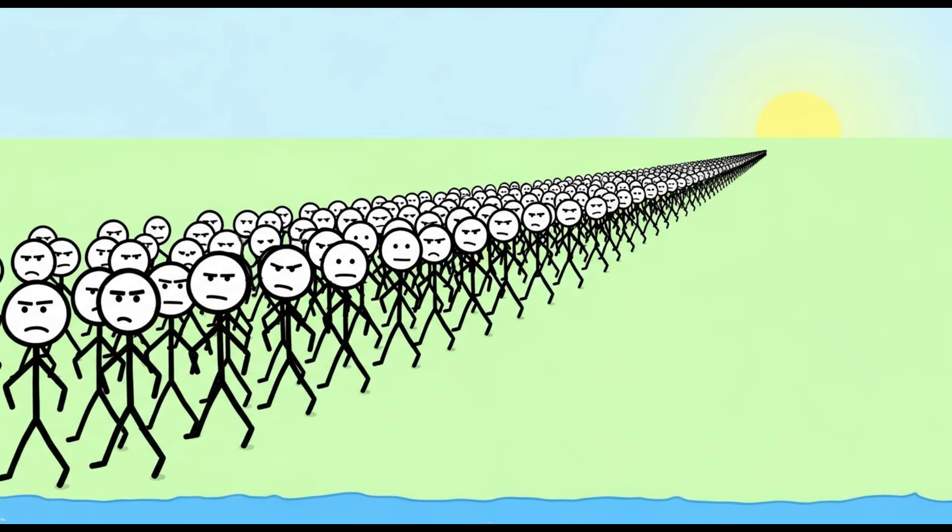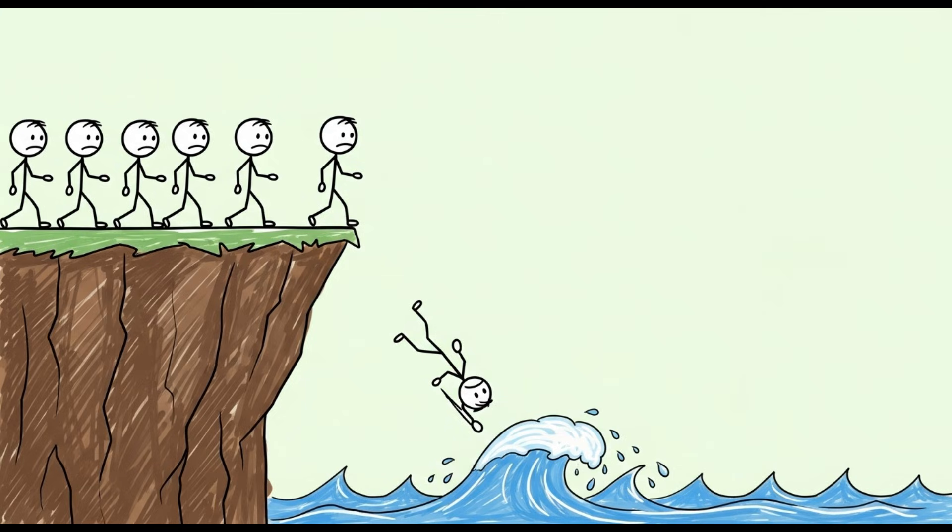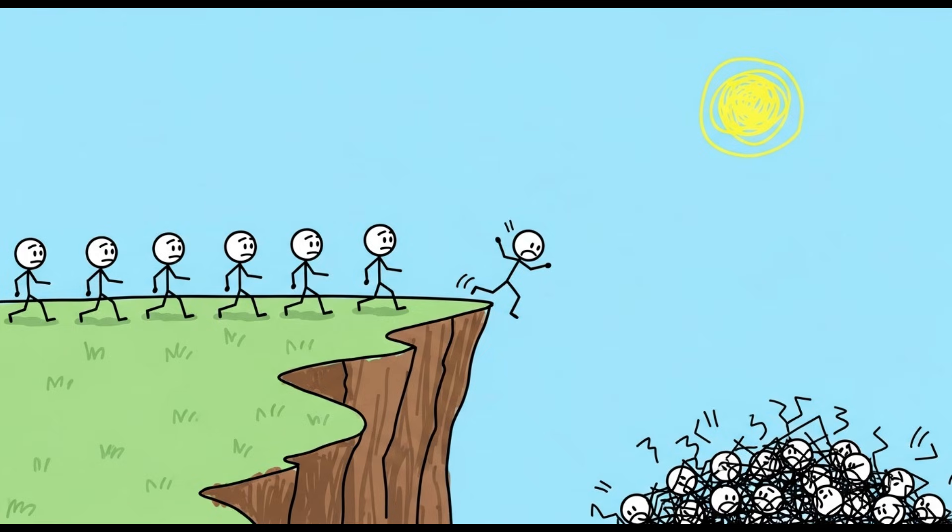When their populations boom, they are driven by an unknown instinct to form a massive army and march in a straight line, inexorably, towards the sea. Upon reaching a cliff, they don't stop. They just keep going, one after another, plunging into the cold, churning waters below in a horrifying act of mass suicide.